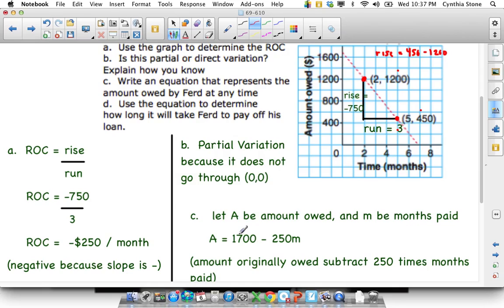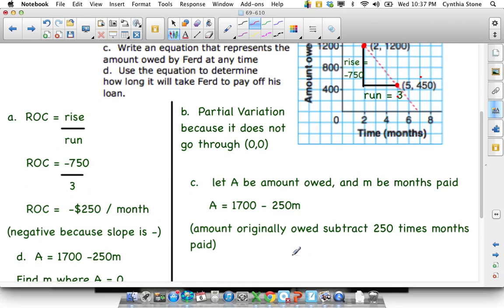Direct variation is the same, except for this number here is zero. But a partial variation is just the fixed amount, the starting value, the initial value, plus or minus the slope or the rate of change times months. So that's our equation.